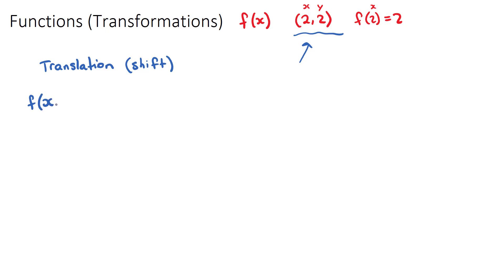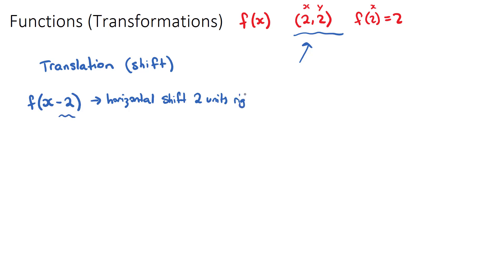The way we express a horizontal shift is f(x - 2). This is a horizontal translation of 2 units. Now you might think it should shift to the left, but with horizontal shifts they're actually the opposite — they get shifted the opposite way to what you think. So f(x - 2) is actually 2 units to the right.